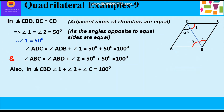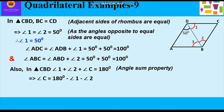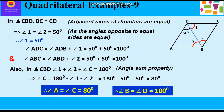In triangle CBD, angle 1 + angle 2 + angle C = 180° by the angle sum property. Since angle 1 and angle 2 are each 50°, angle C = 180° − 50° − 50° = 80°. Therefore angle A = angle C = 80°, since opposite angles of a rhombus are equal. Similarly, angle B = angle D = 100°.